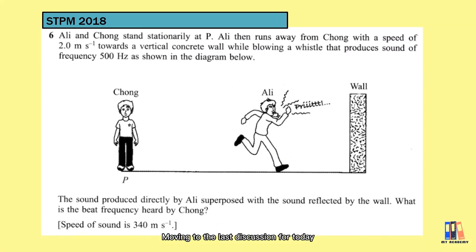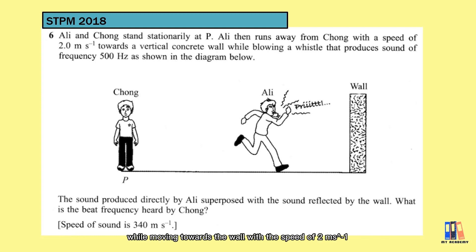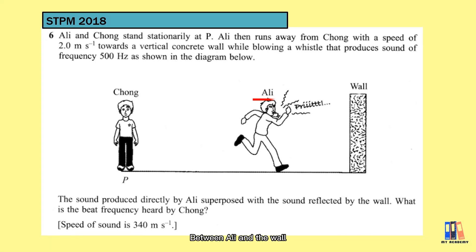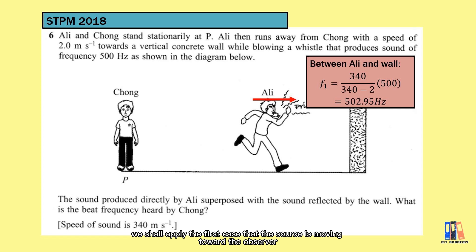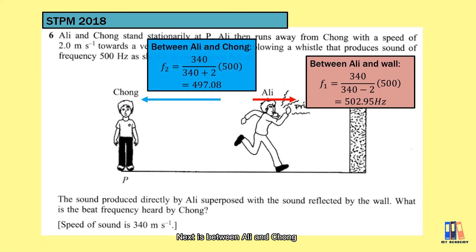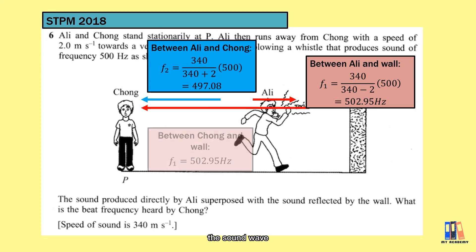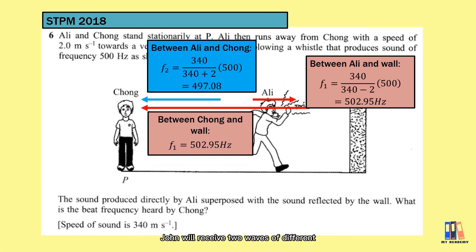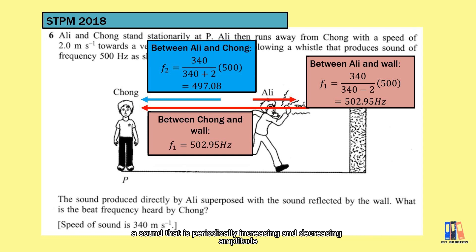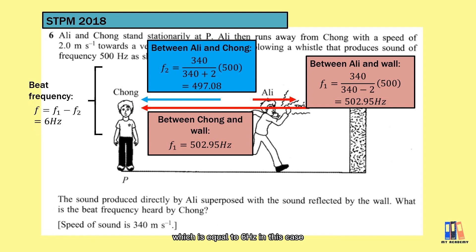For the last discussion, a past year 2018 question: Ali is moving away from Zhong while moving towards a wall at 2 m/s, blowing a whistle at 500 Hz. There are two observers — Zhong and the wall. For Ali and the wall, the source is moving toward the observer, giving a frequency of about 503 Hz at the wall. For Ali and Zhong, the source is moving away, giving an apparent frequency of about 497 Hz. The sound wave reflected from the wall returns to Zhong, who then receives two waves of different frequencies — 503 Hz and 497 Hz. This produces a beat, and the beat frequency is the difference, equal to 6 Hz.